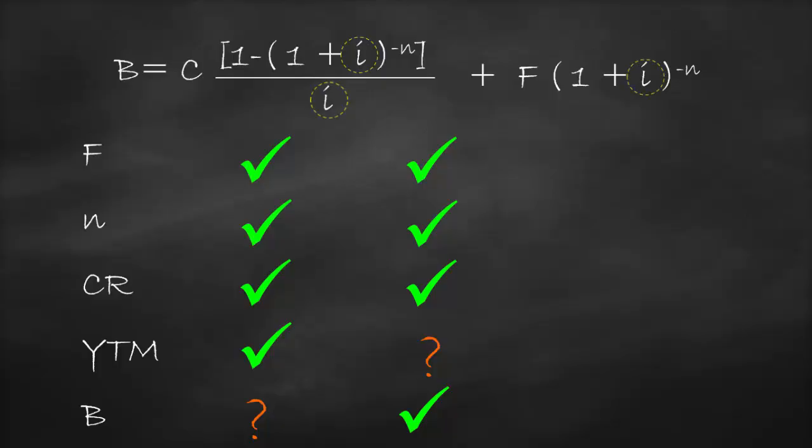Try to rearrange this formula by putting 'i' on one side and all other variables on the other side — is it easy to do manually? The answer is no. Therefore, we use Excel to calculate yield to maturity, and this will be the easiest and quickest way using Excel functions.